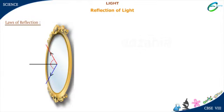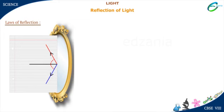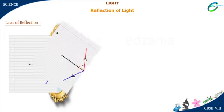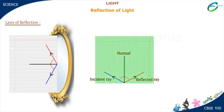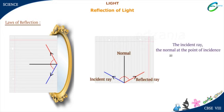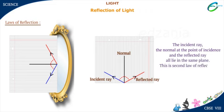Take a look at the activity: a laser beam is struck on the mirror and reflected. If we take out the paper sheet, it will have the incident ray, reflected ray, and normal. The incident ray, reflected ray, and normal lie on the same sheet. The incident ray, the normal at the point of incidence, and the reflected ray all lie in the same plane. This is the second law of reflection.